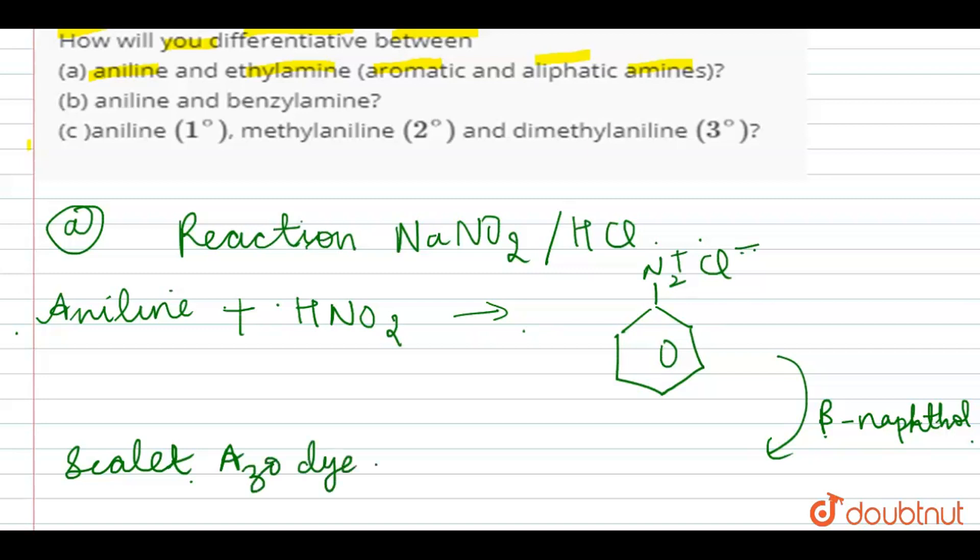This way the dye which is formed is somewhat like this in which this nitrogen is having double bond with one more nitrogen and there is one OH group at one side. So, this way azo dye is formed.